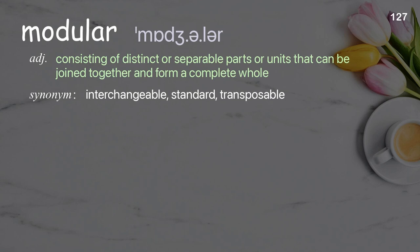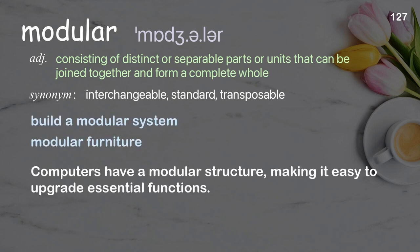Modular: consisting of distinct or separable parts or units that can be joined together and form a complete whole. Examples: build a modular system, modular furniture. Computers have a modular structure, making it easy to upgrade essential functions.